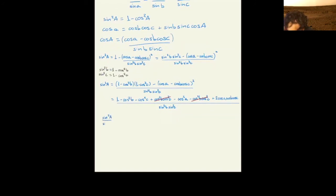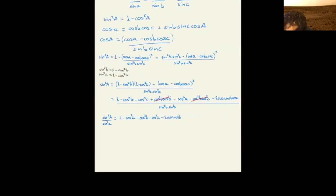Sine squared of big A over sine squared little a equals one minus cosine squared of a minus cosine squared b minus cosine squared c plus twice cosine of a cosine of b and the cosine of c.